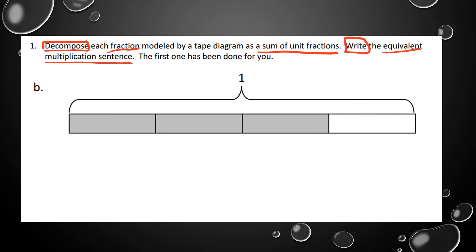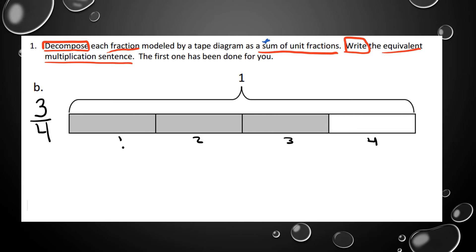The tape diagram has one, two, three, four equal parts — so that's our denominator, the number on the bottom. Three of those parts are shaded in, so that's our numerator. The fraction is three-fourths. I have to write a sum of unit fractions, meaning an addition sentence using the unit fraction one-fourth.